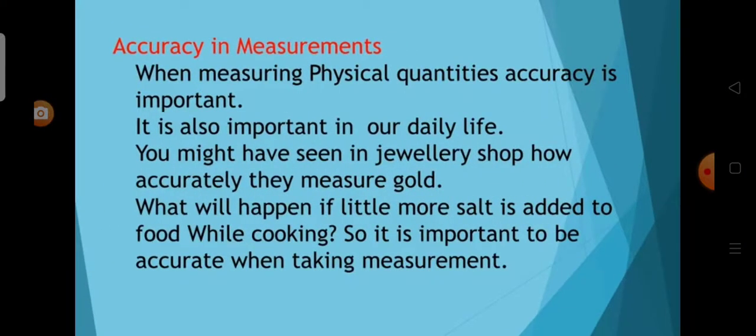Now we will see the last topic: accuracy in measurements. When measuring physical quantities, accuracy is important. It is also important in our daily life. You might have seen in a jewellery shop how accurately they measure gold. What will happen if a little more salt is added to food while cooking? So it is important to be accurate when taking measurements. Thank you students.